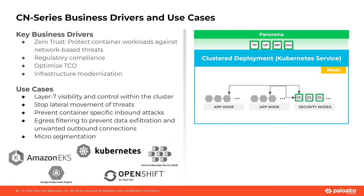The third key business driver is optimizing total cost of ownership. Our customers are looking to optimize their firewall spend and, as we've covered in the architecture snippet, this is enabled through our Kubernetes service deployment model. And the fourth and final business driver is infrastructure modernization.